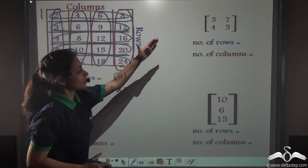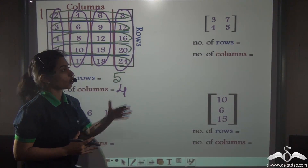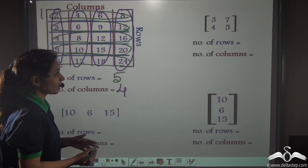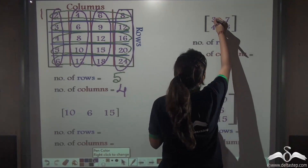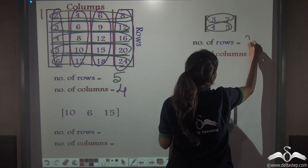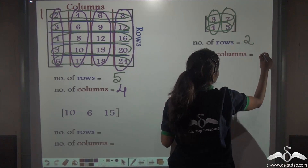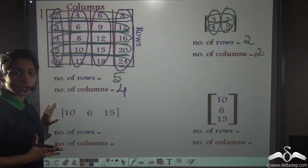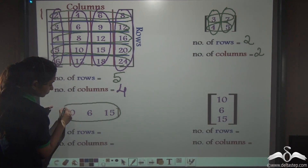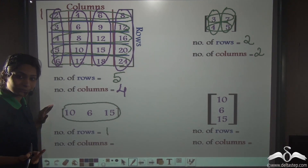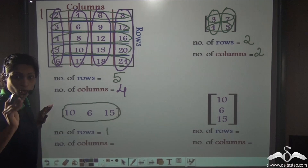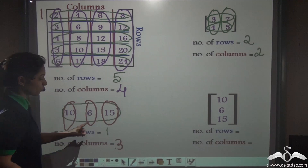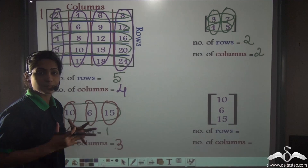Similarly, this was a big matrix. Here are some very small matrices — tell me the number of rows and columns of these matrices. Let's take this one first: number of rows is 1, 2 and number of columns again 1 and 2. Take this one: what is the number of rows? Just 1. And number of columns? Look carefully: 1, 2, 3. So here we have just 1 row but 3 columns — even this type of matrix exists.